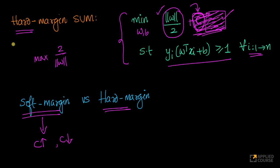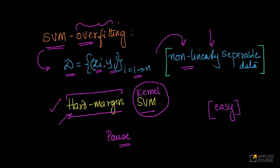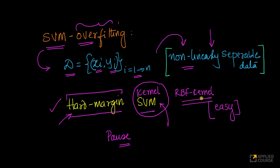Since there are no hyperparameters in the hard margin SVM primal formulation, the next thing to look at is the kernel. Kernels have hyperparameters we can play with. One of the most powerful and widely used kernels for non-linearly separable data — when we are not given specific properties like concentric circles — is the radial basis function (RBF) kernel. It is a generic kernel that works well on non-linearly separable data.